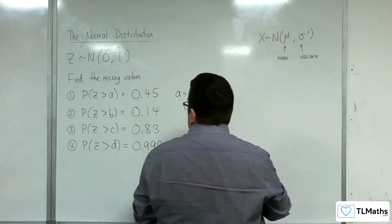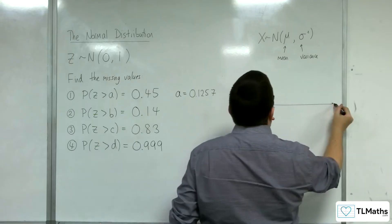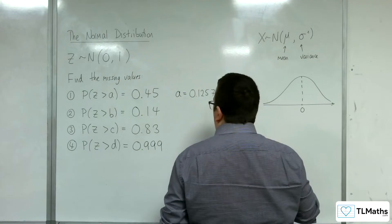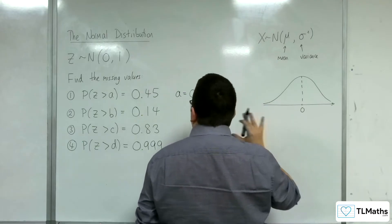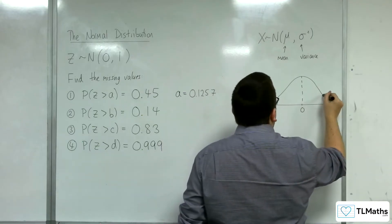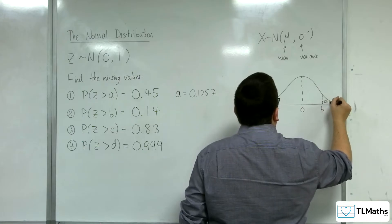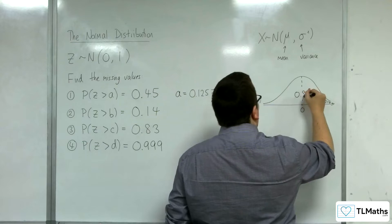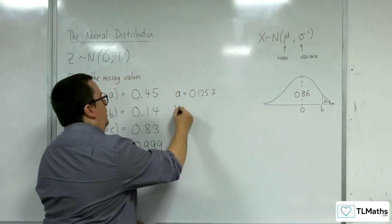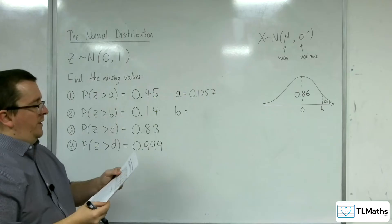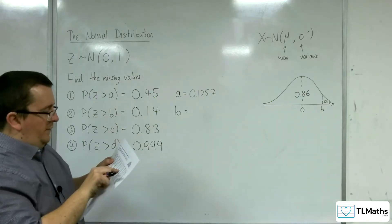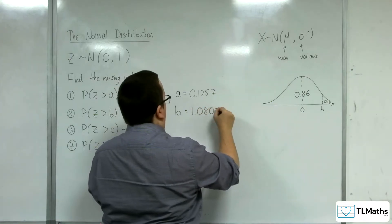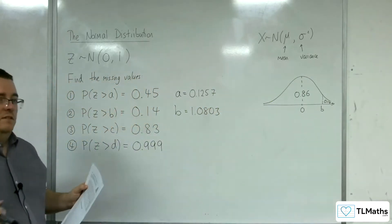Let's try number 2. There's 0. Somewhere is b, so the probability to the right is 0.14. So b would have to be here for that to be 0.14. To the left we would have to have 0.86. So I need to look up 0.86 in the table — that gives 1.0803. That's the value I need.